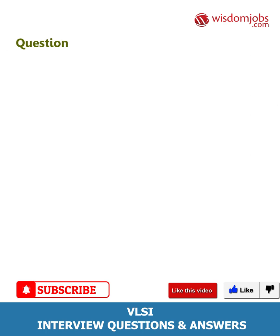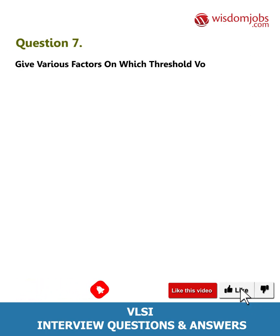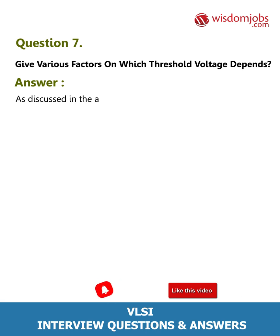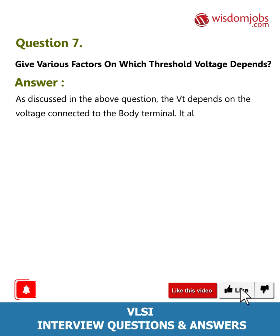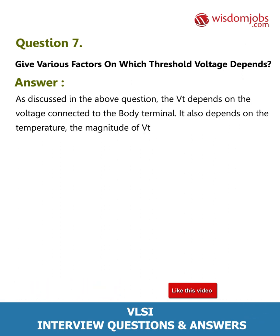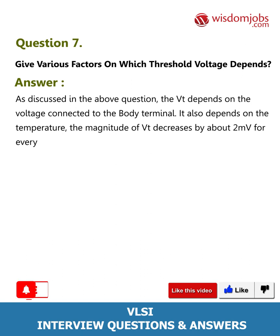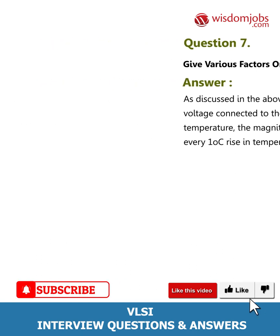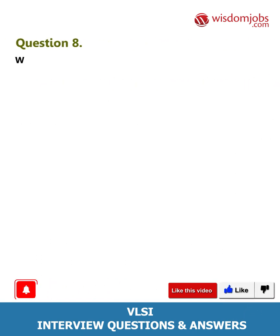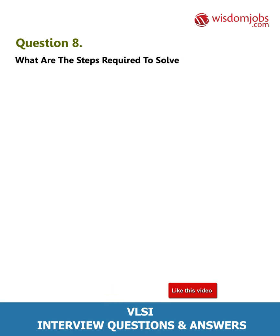Question 7: Give various factors on which threshold voltage depends. Answer: As discussed, the threshold voltage (Vt) depends on the voltage connected to the body terminal. It also depends on temperature — the magnitude of Vt decreases by about 2 millivolts for every 1°C rise in temperature.